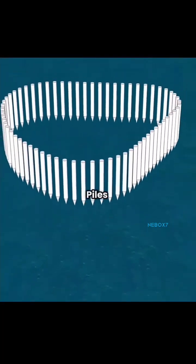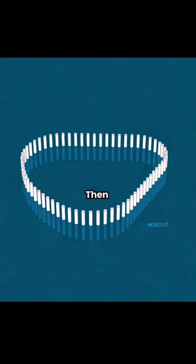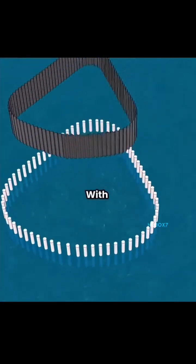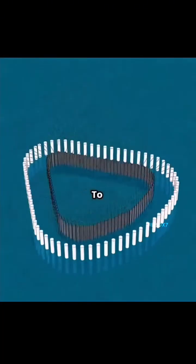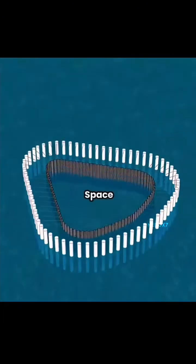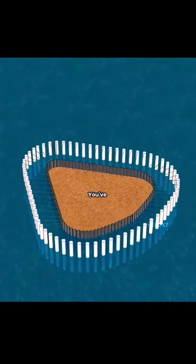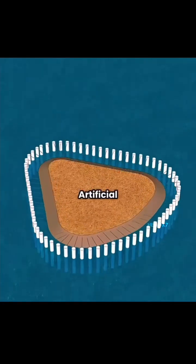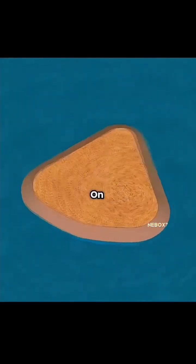You begin by driving a row of piles into the sea, then enclose them with steel plates to carve out a space. Just like that, you've created an artificial island.